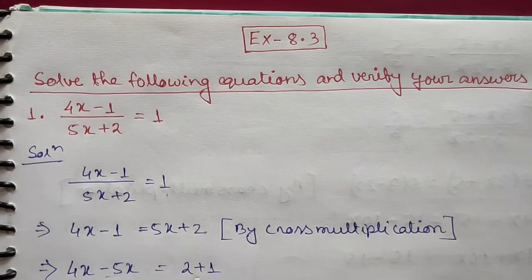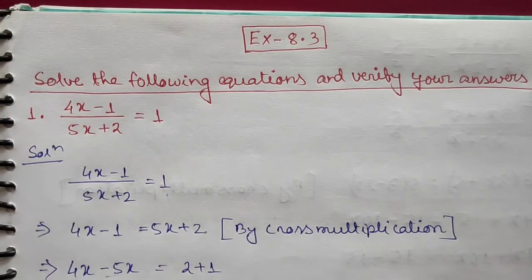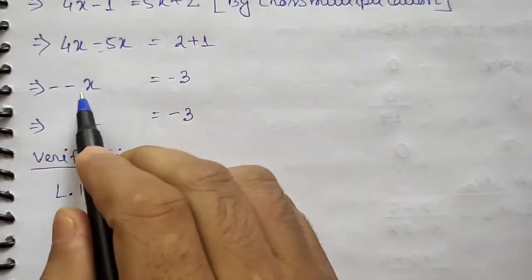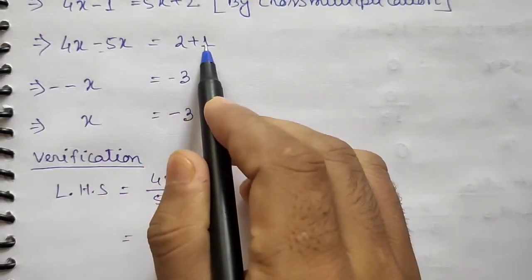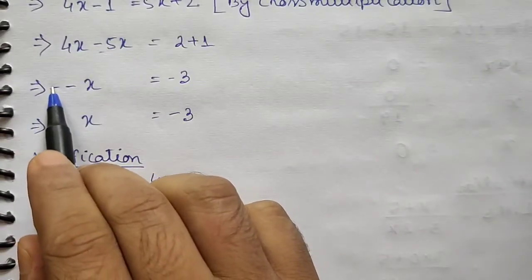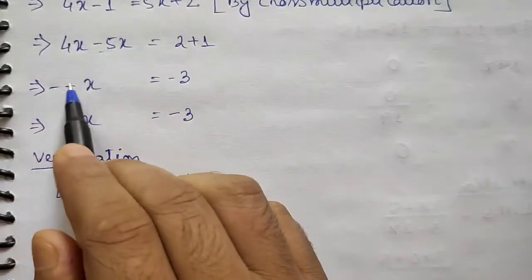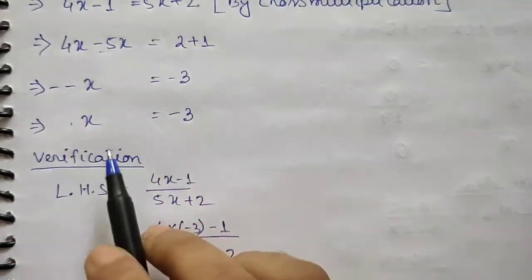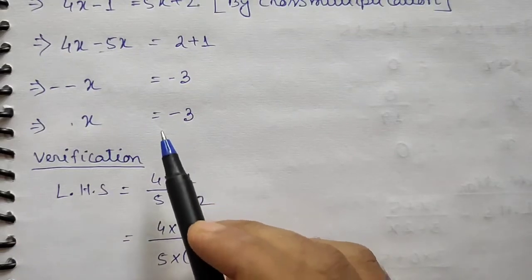After transposing, as it was +5 it becomes -5, and as it was -1 it becomes +1. So 4x - 5x = -x and 2 + 1 = 3. We take minus common on both sides, so minus times minus gives plus, and minus times 3 gives minus 3. Therefore x = -3.